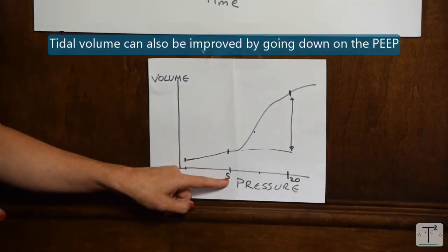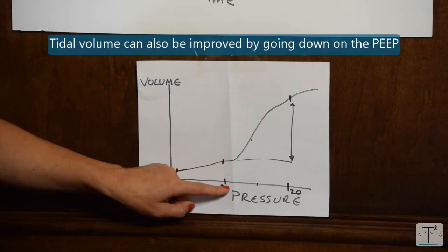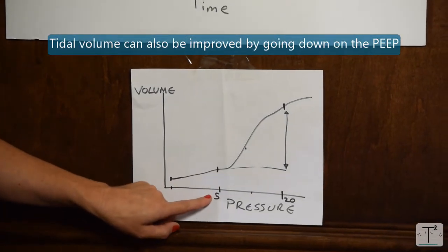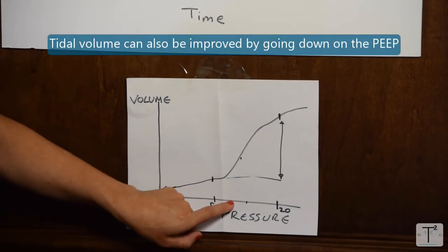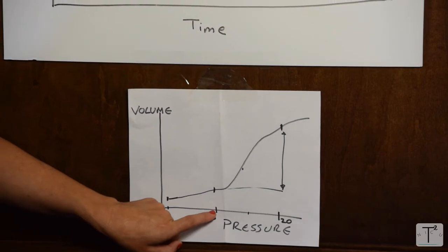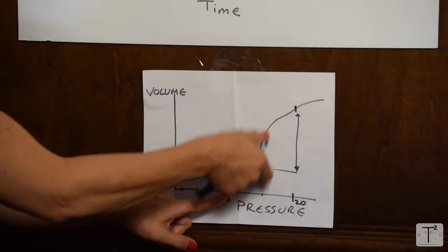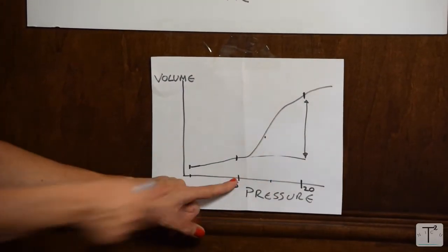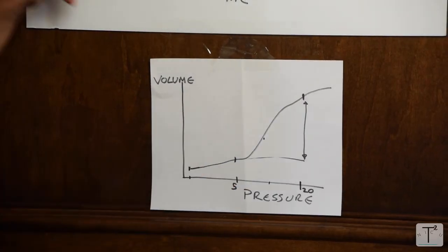Also, to improve your tidal volume, you can go down on the PEEP. So say our PEEP really was 7. If you take that down to 5, if anything, that's going to improve your tidal volume. But going down on the PEEP, what's that going to do? That would decrease your oxygenation.